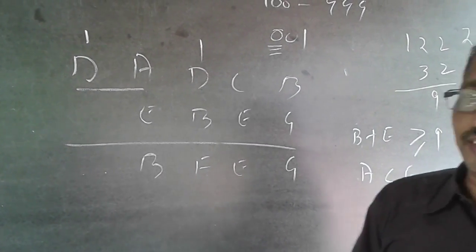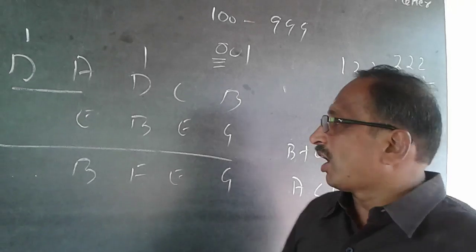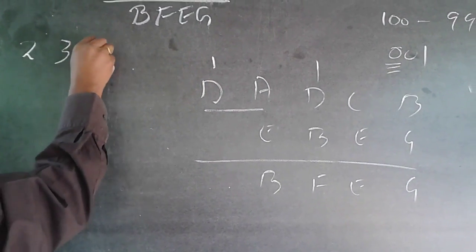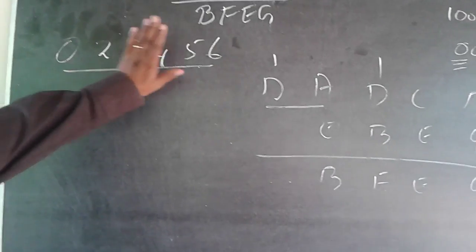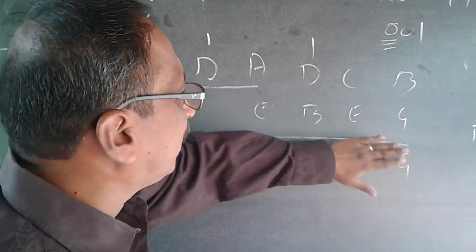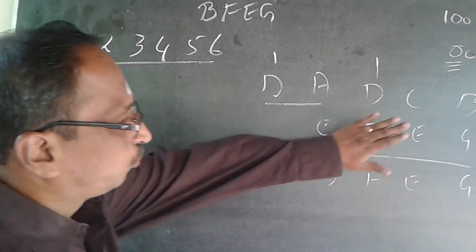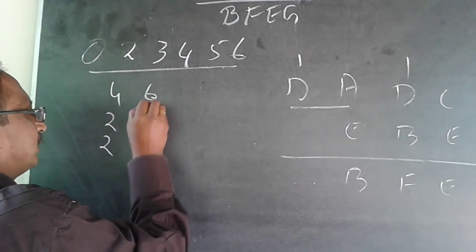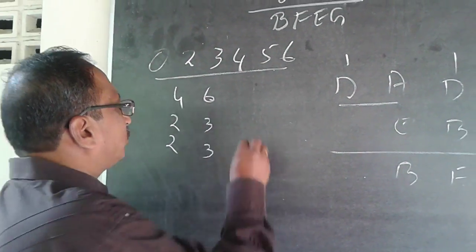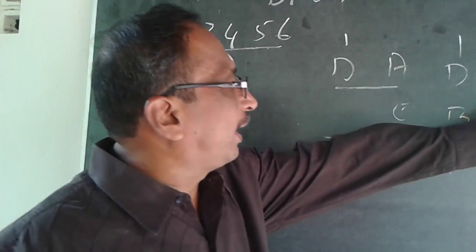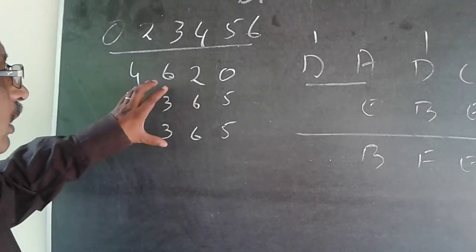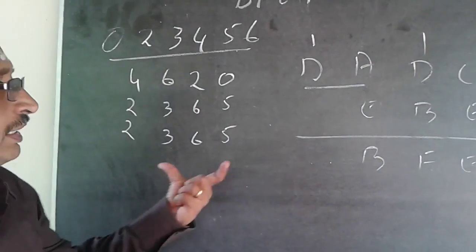I go by elimination of possible alternatives. I always start from the right-hand side. The numbers I can use are 0, 2, 3, 4, 5, 6 — since 1 is already given. I need to find what satisfies B minus G equals G. B should definitely be an even number. Possibilities are: 4 minus 2 equals 2; or 6 minus 3 equals 3. I cannot use 2 minus 1 equals 1 since 1 is taken. Another option: 2 minus 6 equals 6 (with borrowing, 12 minus 6 equals 6), or 0 minus 5 equals 5 (with borrowing). So I have up to 4 options to check.